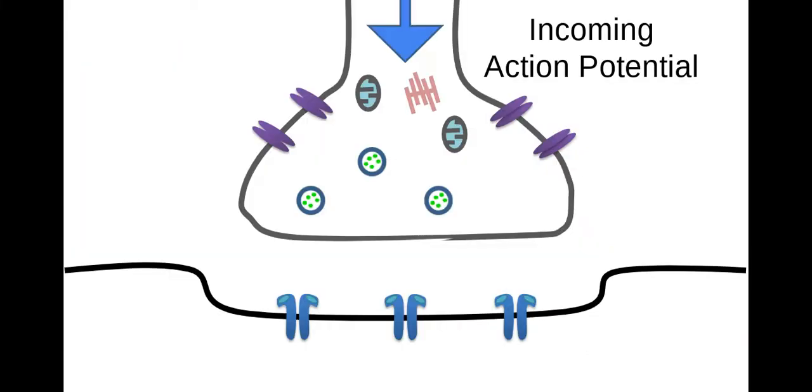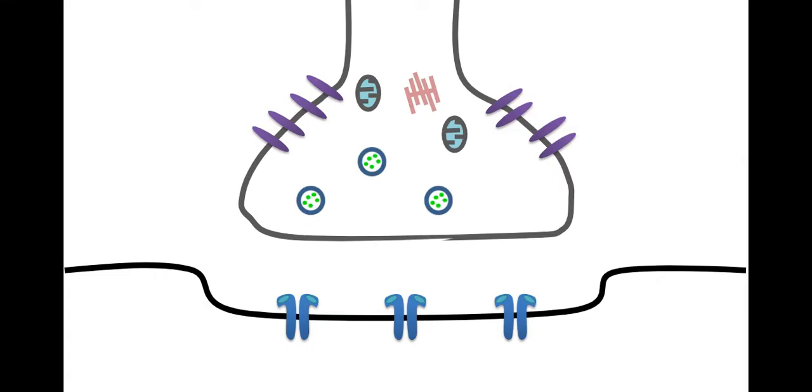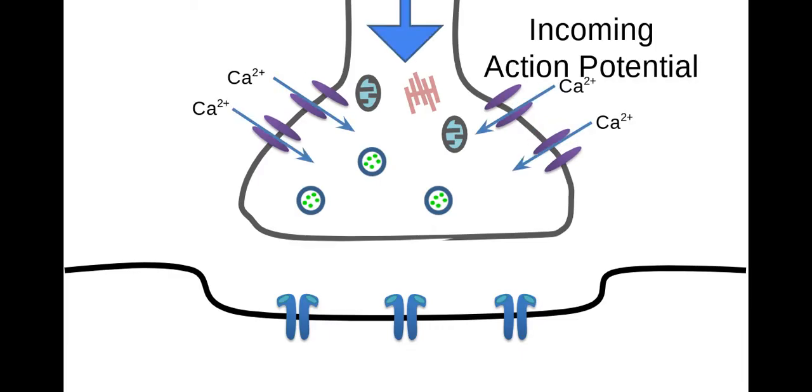A synapse works by the incoming action potential traveling down the presynaptic membrane. As it does this, it causes calcium channels on the membrane to open. Calcium rushes into the presynaptic knob along its electrochemical gradient, and this rush of calcium causes vesicles containing neurotransmitter to fuse with the presynaptic membrane. The vesicles move using the cytoskeleton, which uses ATP to contract its contractile filaments to move those vesicles toward the presynaptic membrane.